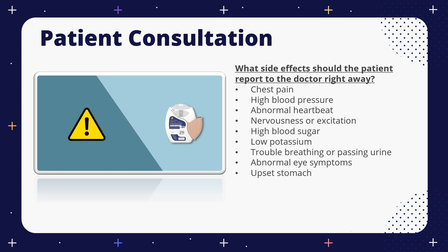Due to the use of vilanterol, the LABA component of this medication, the patient may experience chest pain, increased blood pressure, irregular heartbeat, or nervousness, and they need to call the doctor right away. The patient may also experience changes in laboratory values such as high levels of blood sugar and low levels of potassium. Urinary retention symptoms may develop or worsen, including difficulty or painful urination, urinating frequently, or a weak stream or dripping when urinating.